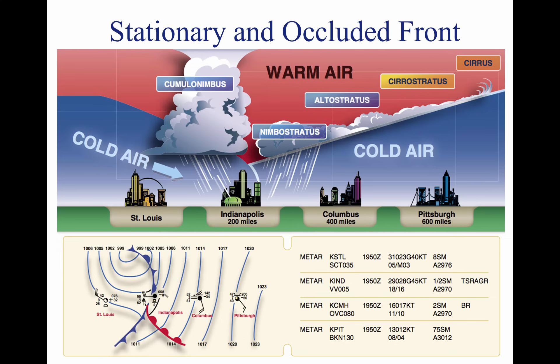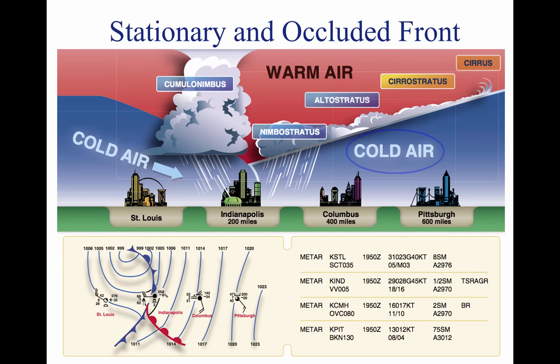An occluded front occurs when a fast-moving cold front catches up with a slow-moving warm front. As the occluded front approaches, warm front weather prevails but is immediately followed by cold front weather. There are two types of occluded fronts, and the temperatures of the colliding frontal systems play a large part in defining the type of front and the resulting weather. The above picture depicts a cross-section of a typical cold front occlusion. A cold front occlusion occurs when a fast-moving cold front is colder than the air ahead of the slow-moving warm front. When this occurs, the cold air replaces the cool air and forces the warm front aloft into the atmosphere.